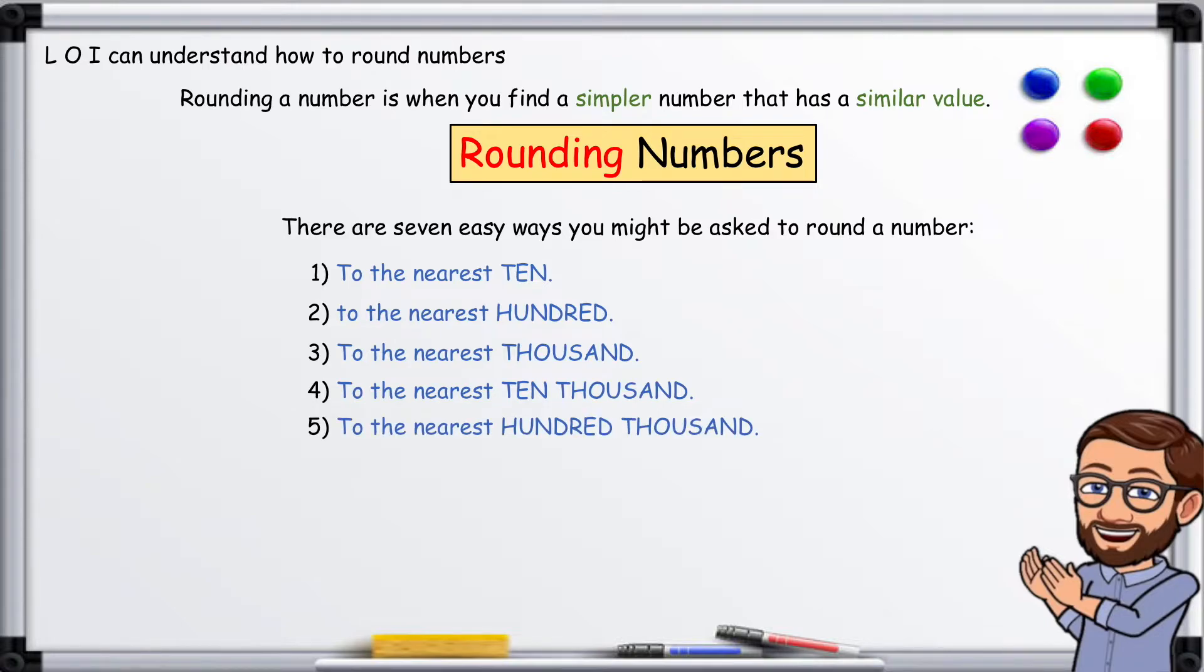five, to the nearest hundred thousand; six, to the nearest million; and seven, to the nearest whole number.